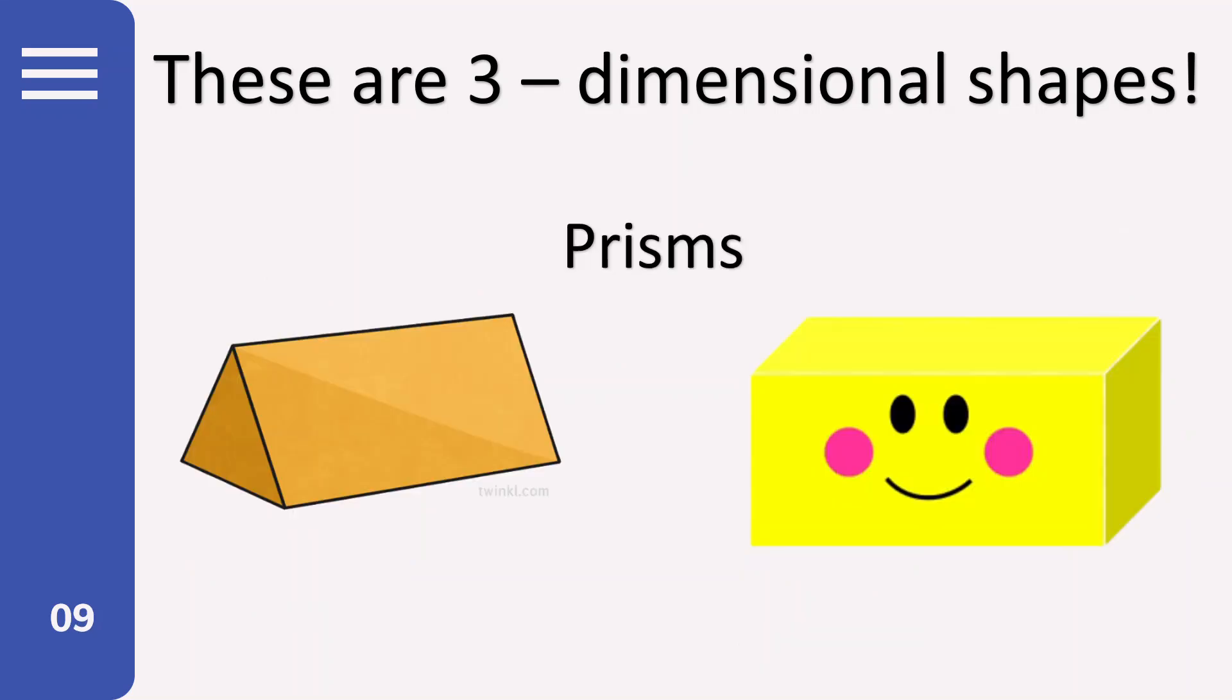Alright, now we have prisms. And we have two kinds of prisms. The first one is named by looking at one of the surfaces. The shape is triangle, so we call that triangular prism. Looks like a tent, looks like a Toblerone. Two opposite faces. On the other side, the opposite face is a triangle.